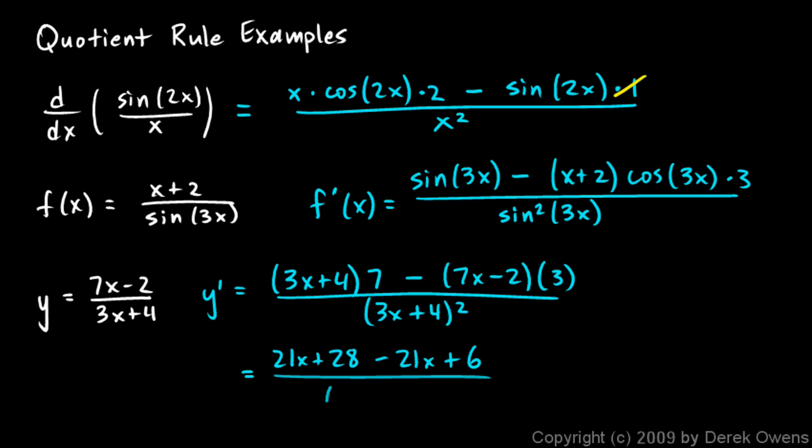And all of this is over 3x plus 4 squared. And then the 21x and the minus 21x cancel out, and we're left with 28 plus 6, which is 34 over 3x plus 4 squared.